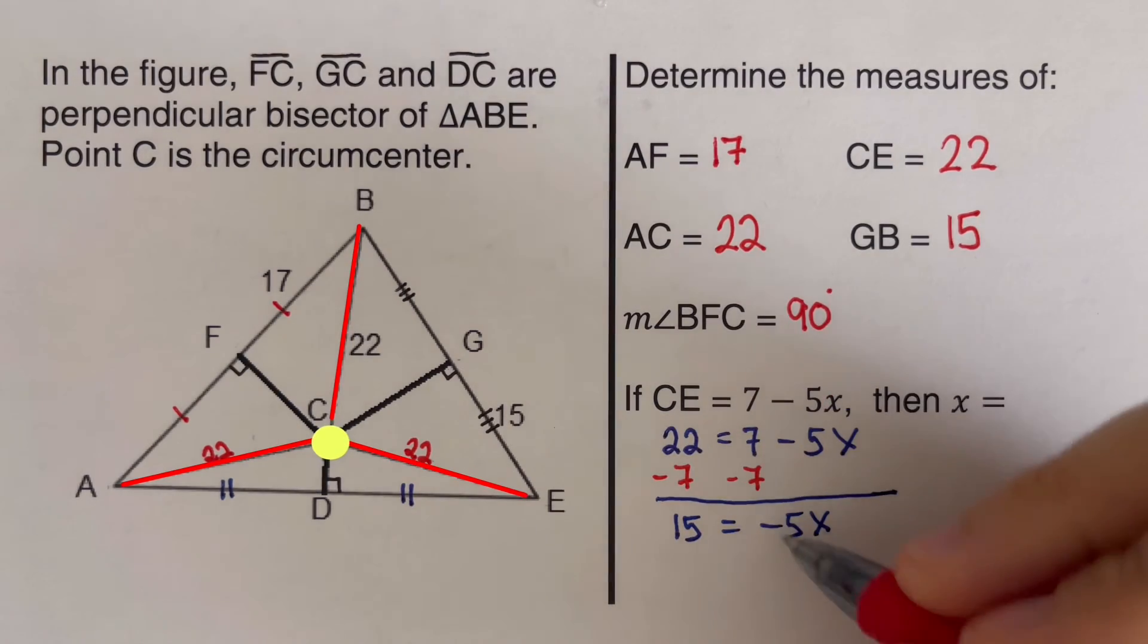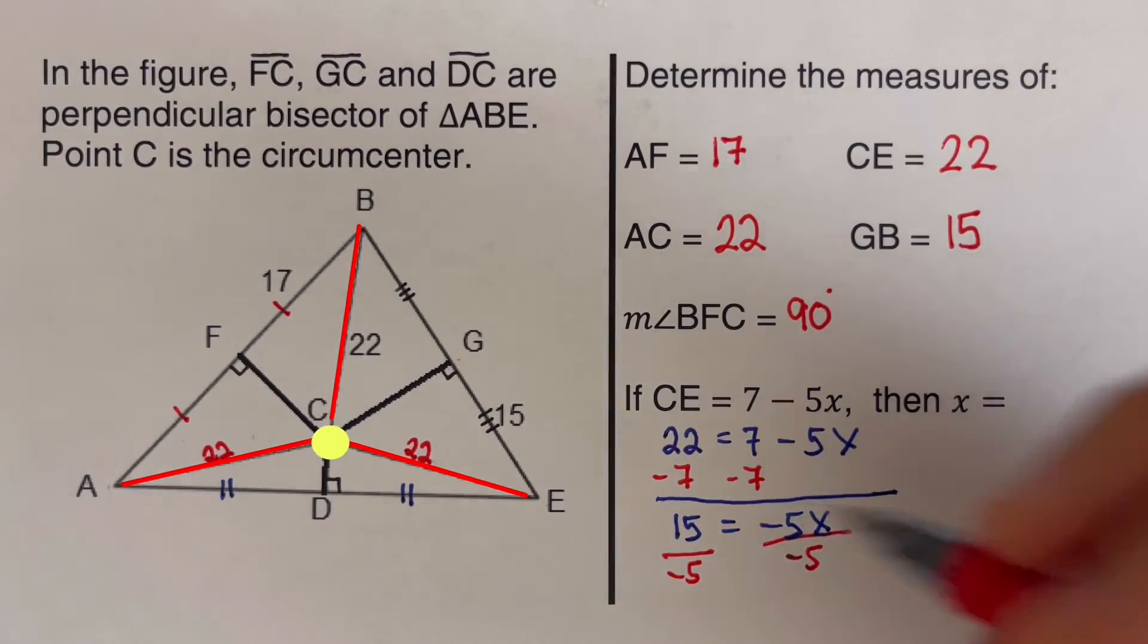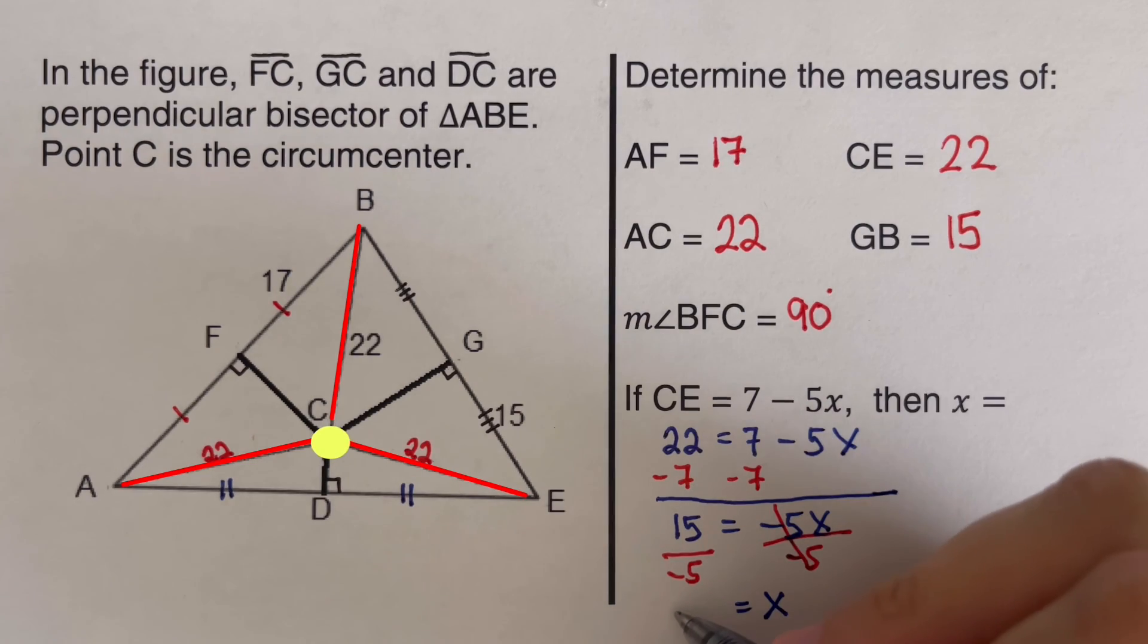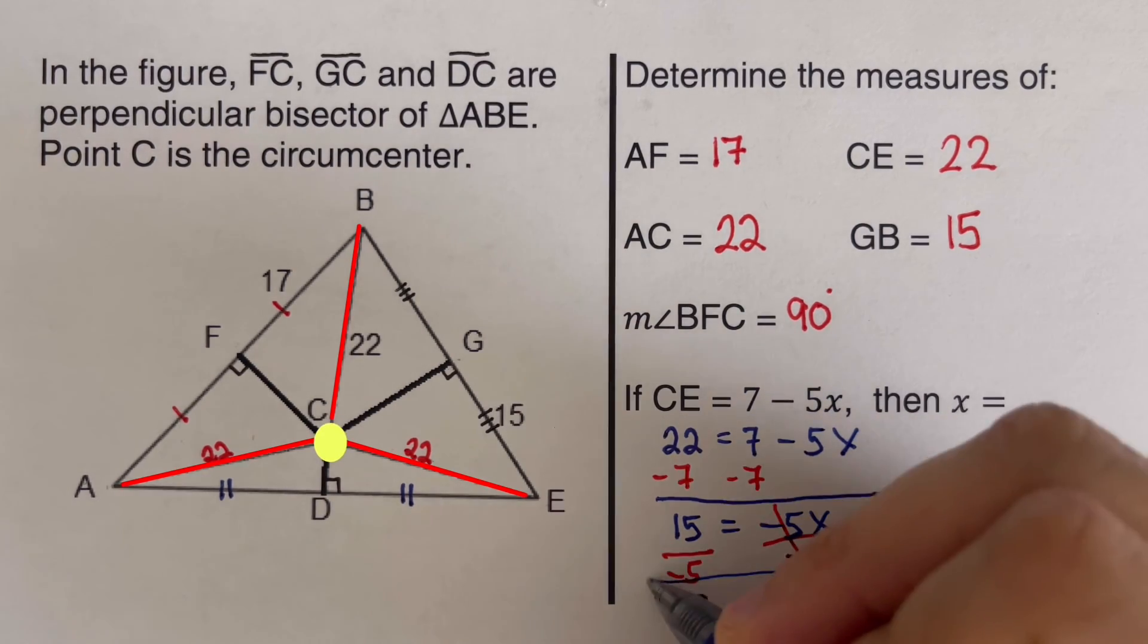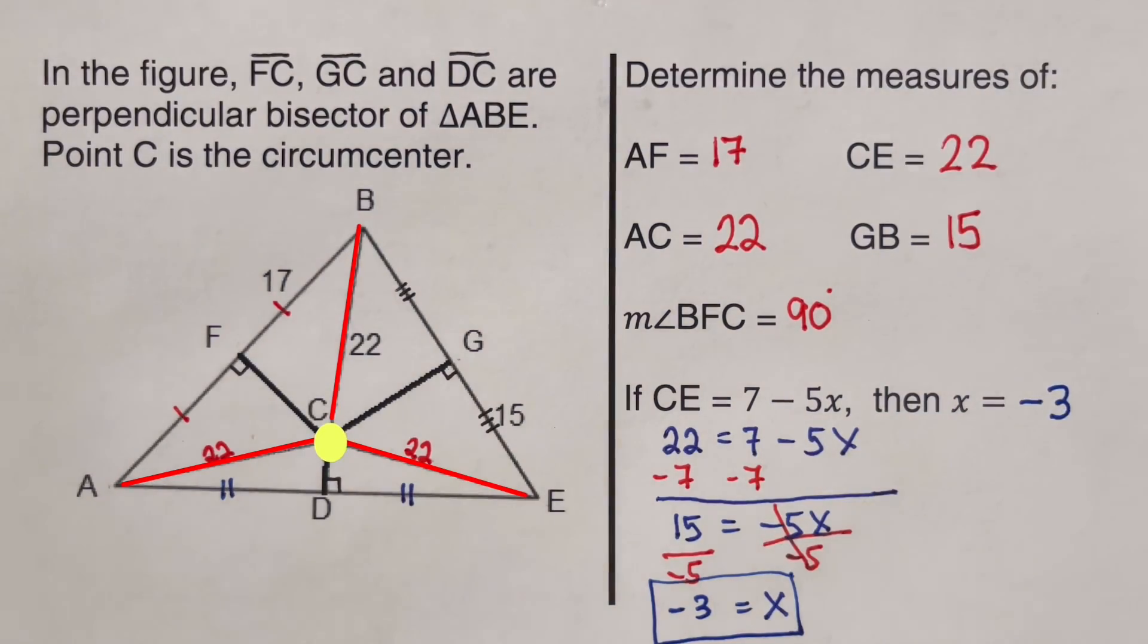So we're going to divide both sides by negative 5, divide this by negative 5. So we can cross the negative 5 out. We are left with negative 3 is equal to X. So the value of X that we have here would be negative 3.